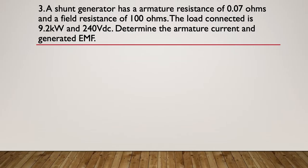Question four: A shunt generator has an armature resistance of 0.07 ohms and a field resistance of 100 ohms. The load connected is 9.2 kilowatts and is supplied from a 240 volts DC supply. Determine the armature current and the generated EMF. Pause here, think about it. Here's the hint: here's the two formulas you're going to need. Current through the armature equals I load plus I field, and the EMF is equal to the volts at the terminal plus the volts at the armature.